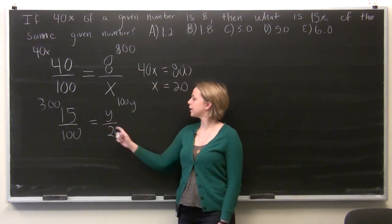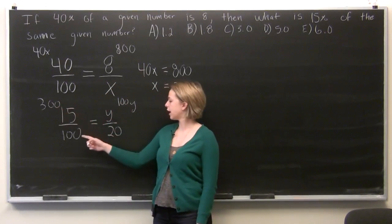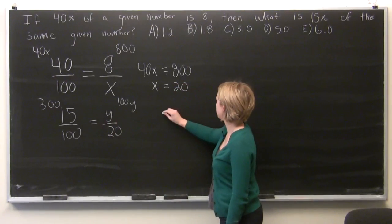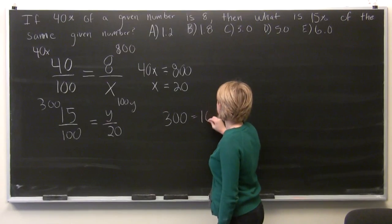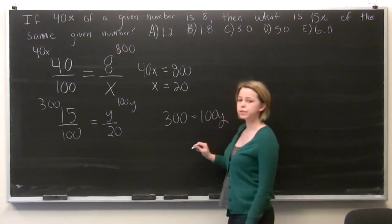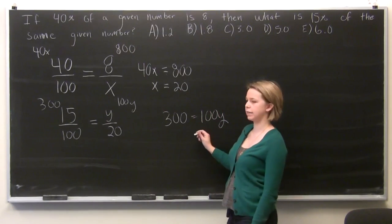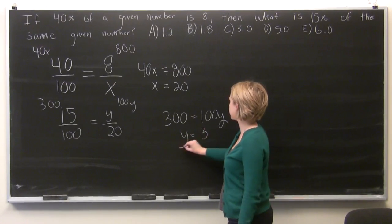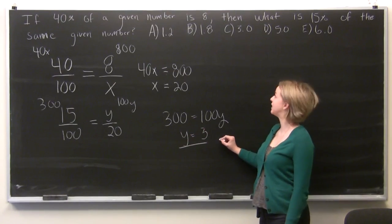So we've got 20 times 15 is 300, and 100 times y is simply 100y. We'll set those two terms equal to each other and solve for y, which is 3. So we know that our answer choice is C.